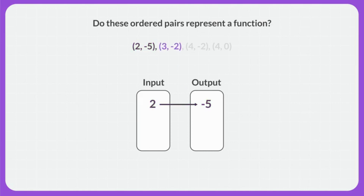Now I'll look at this ordered pair. This ordered pair has an input of 3 and an output of negative 2. So far there are two different inputs, each with its own output. This ordered pair has an input of 4 and an output of negative 2 — that's the same output as there was with 3. That's okay though. Two different inputs can share the same output.